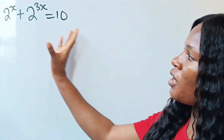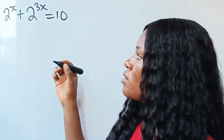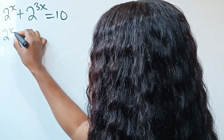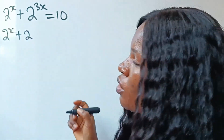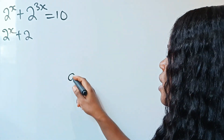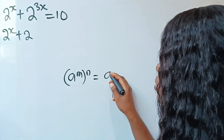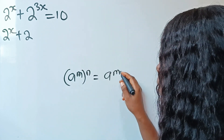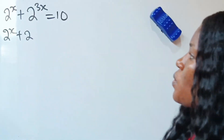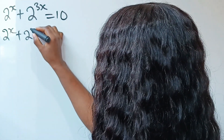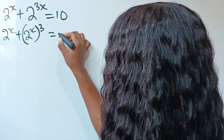Hello everyone, let's quickly solve for the value of x. We have 2 to the power of x plus 2 to the power of... I want us to note that a to the power of m, raised to the power of n, is equal to a to the power of m times n. Therefore we can write this as 2 to the power of x raised to the power of 3.